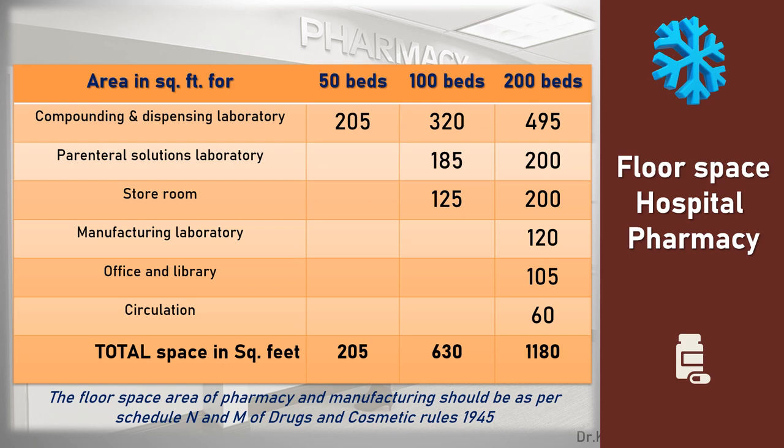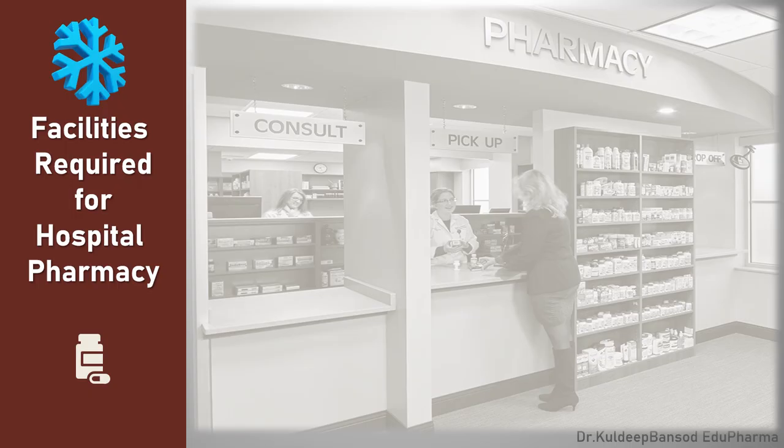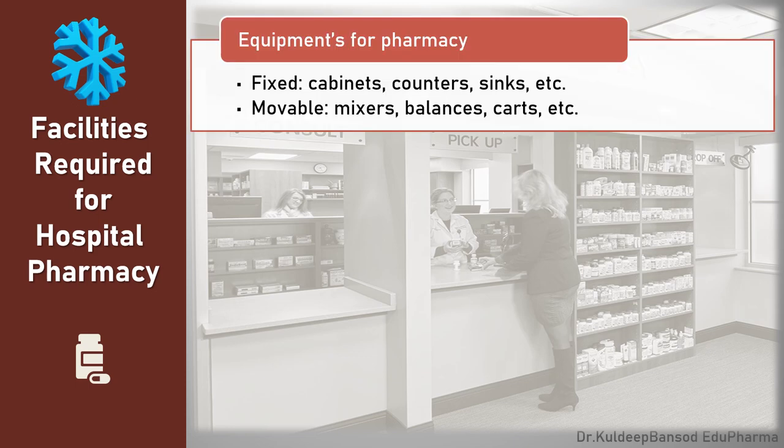A specific area for parenteral solutions is also identified and required. The floor space area of pharmacy and manufacturing should be as per Schedule N and M of Drugs and Cosmetic Rules 1945. Schedule M specifies requirements of machineries for various dosage forms and manufacturing; select such equipment ensuring good services with minimum cost. For efficient running of the department, supply of necessary bookkeeping, stationery, furniture, material, and equipment should be provided.